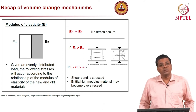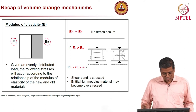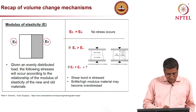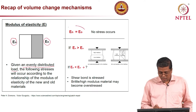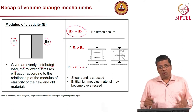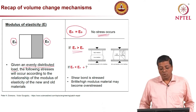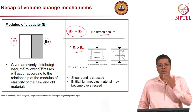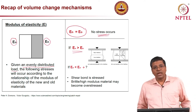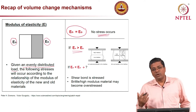The other parameter is modulus of elasticity. E_O indicates the modulus of the old material and E_N indicates the modulus of the new or repair material. Given an evenly distributed load, the following stress will occur according to the relationship of moduli. If both moduli are equal, there is no generation of stress. But if E_N is greater than the modulus of the old material, the material with higher modulus will experience higher stress at the same strain level and will tend to crack at an earlier time.